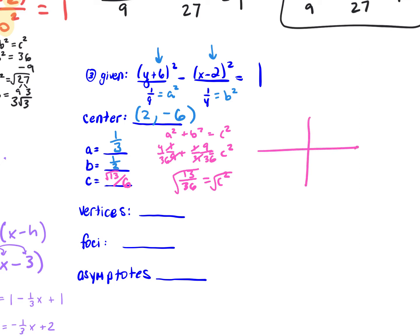Let's figure out our vertices. Since y comes first, we're going up and down. Plotting the center at right 2, down 6, we go up and down a units — that's 1/3 — to our vertices. Our x stays at 2, and we go plus or minus 1/3 from negative 6. So our vertices are at 2, negative 6 plus or minus 1/3. Since it's multiple choice, it may appear as an improper fraction or written differently.